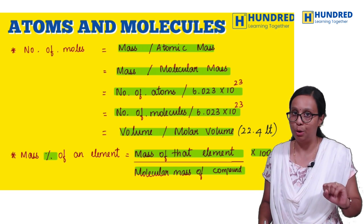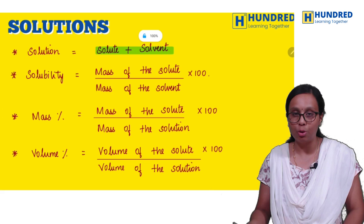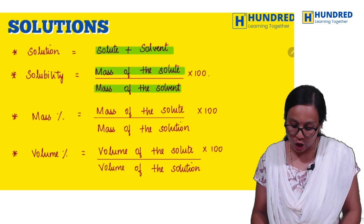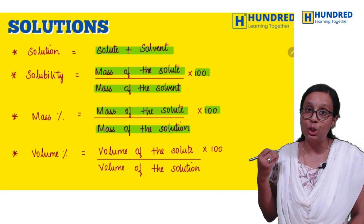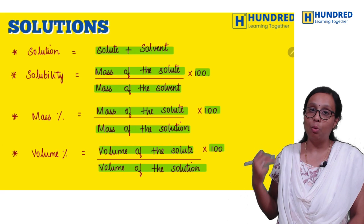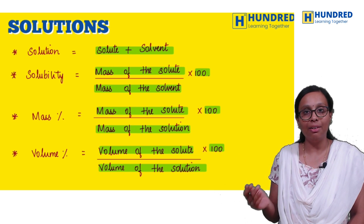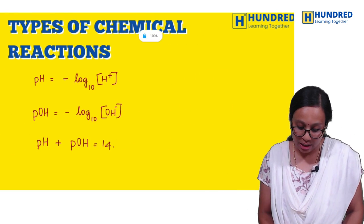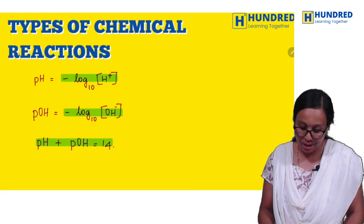Next, solution. Solubility: mass of the solute by solvent into 100. Mass percentage: mass of the solute by mass of the solution into 100. Volume percentage: volume of the solute divided by volume of the solution into 100. Volume in liters or milliliters, mass in grams or kilograms.